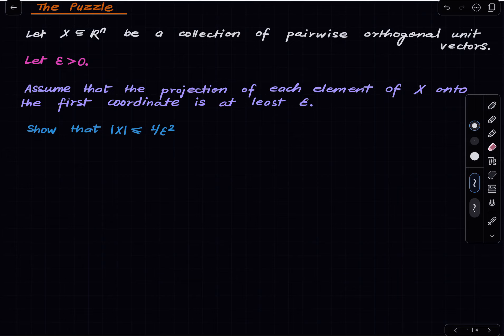So what we are given is a subset of R^n such that the elements of this set, we have called it X, have the property that they are pairwise orthogonal and each of them has magnitude 1, so they are unit vectors.